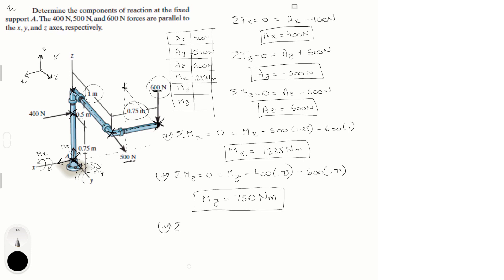Sum of the moments about the Z axis equals 0. The 400 N force creates no moment because it's applied right at Z. The 500 N force creates no moment because it lies on the ZY plane. The 600 N force creates no moment because it's parallel to Z. So the only term is the reactive moment MC, which means MC equals zero. Final answers: AX, AY, AZ, MX, MY, and MC — which is zero.